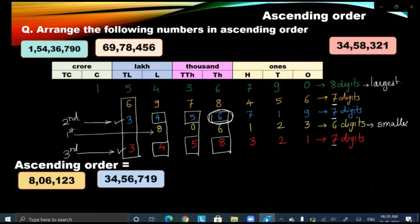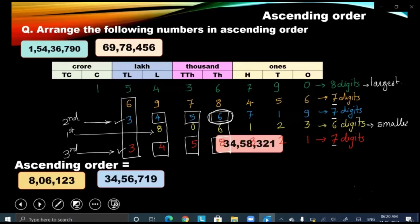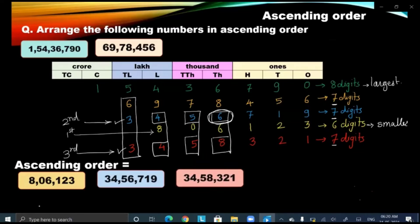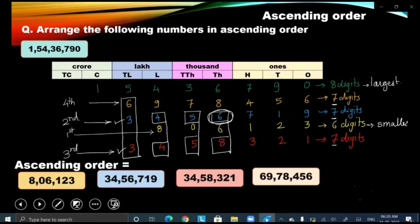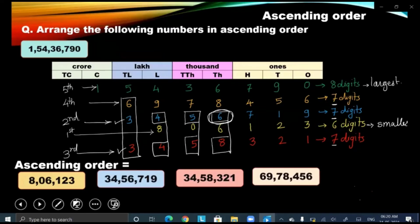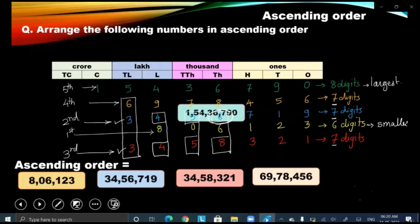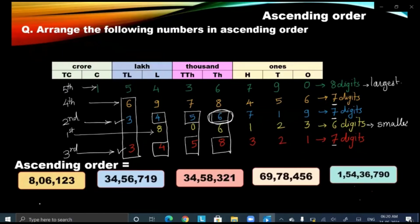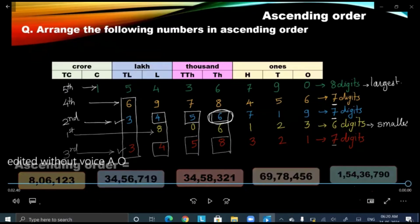Now to decide third place — obviously the next number will come in third place, and the remaining seven-digit number will come in fourth place. Let us put it in fourth place, and the largest number will come in fifth place. I hope children this is clear to you. Thank you.